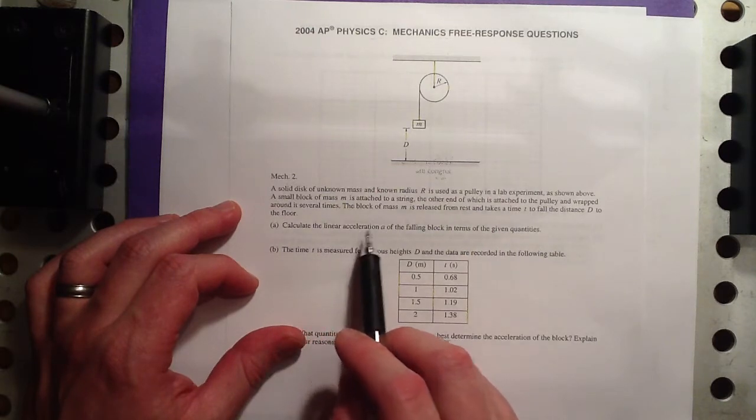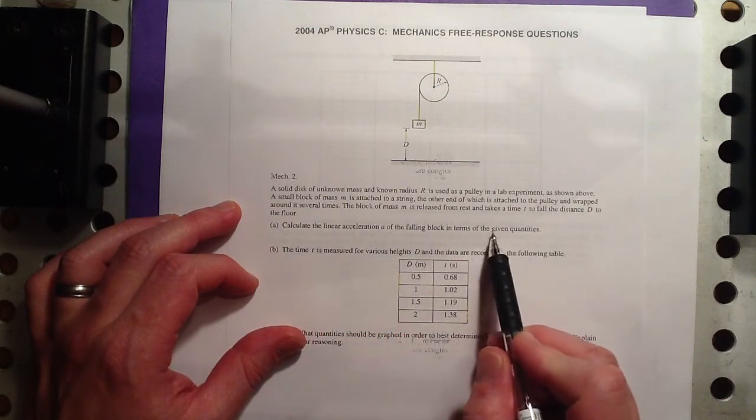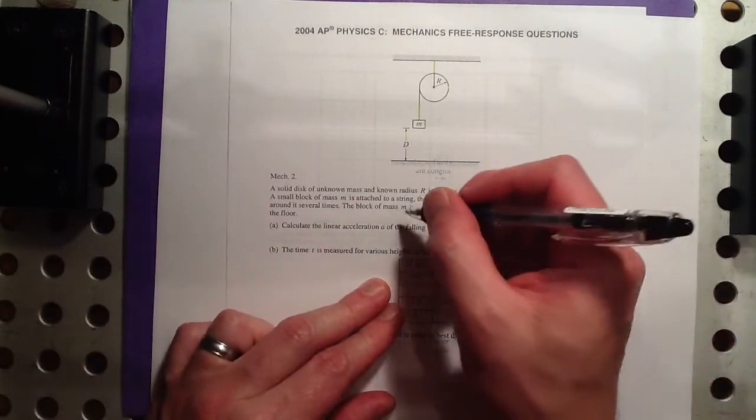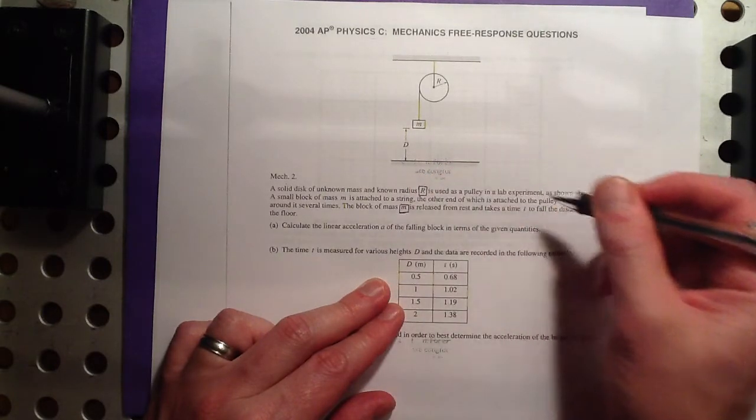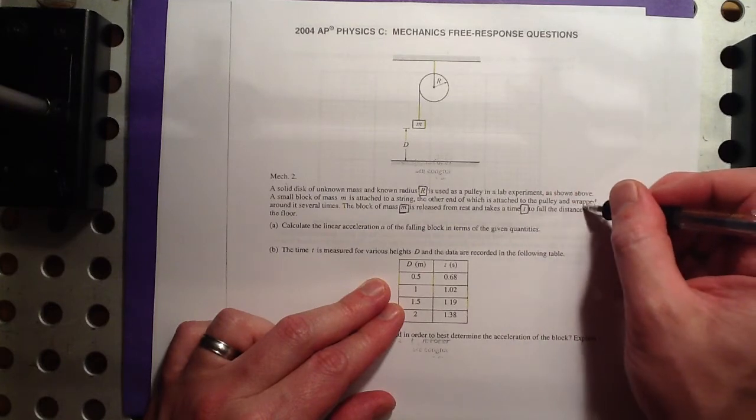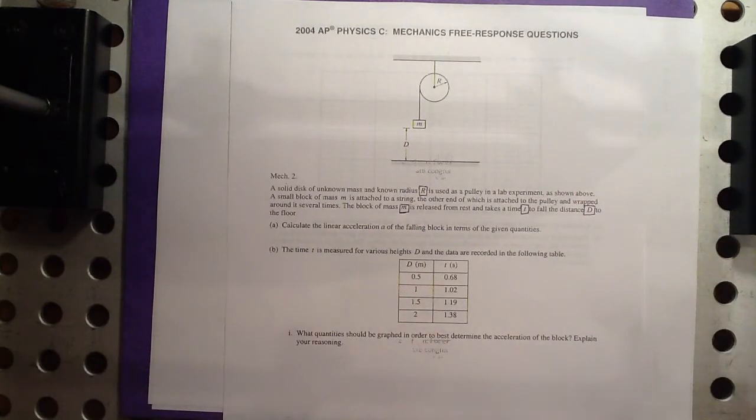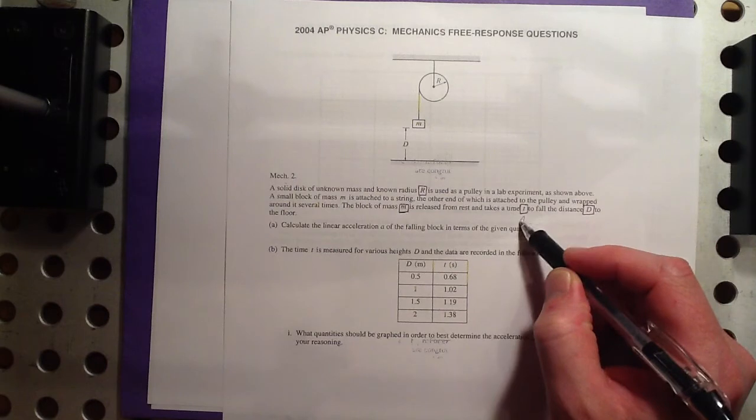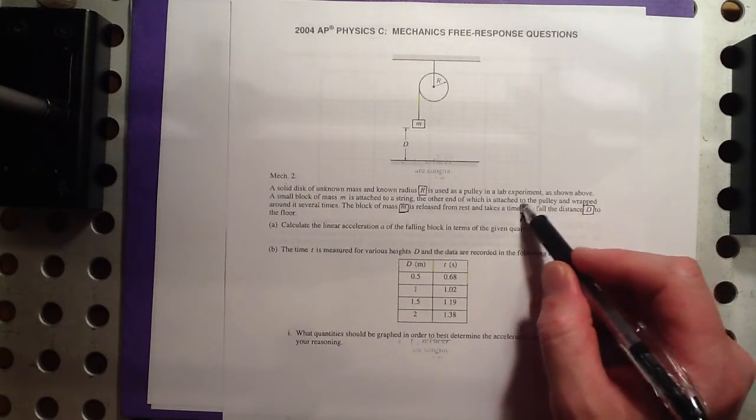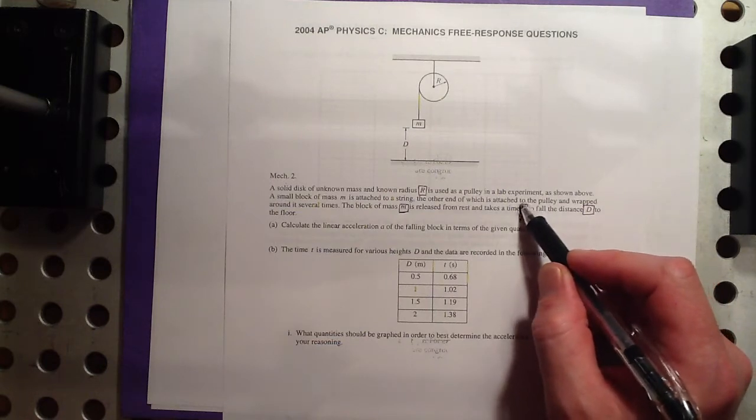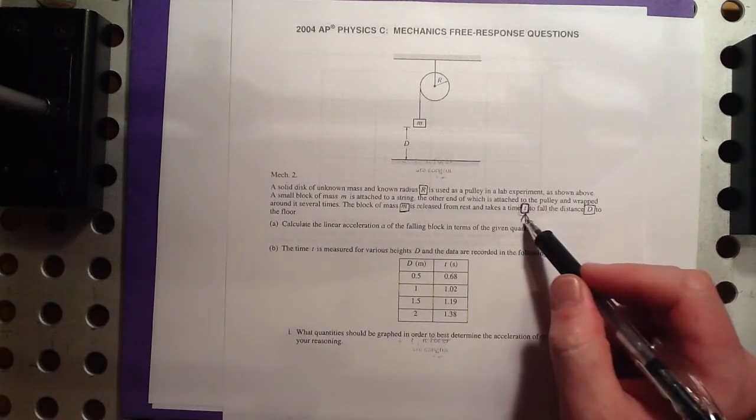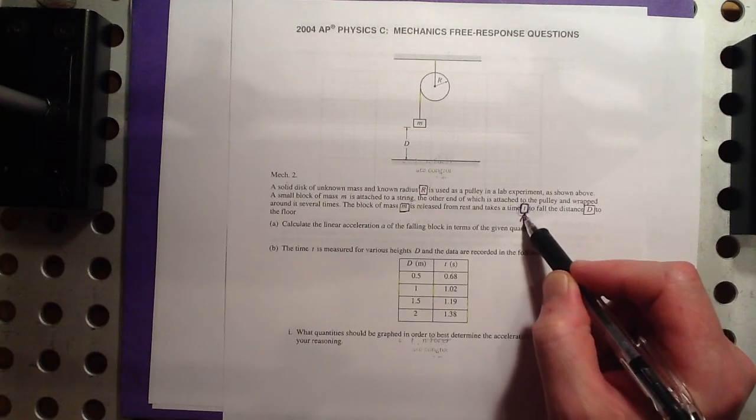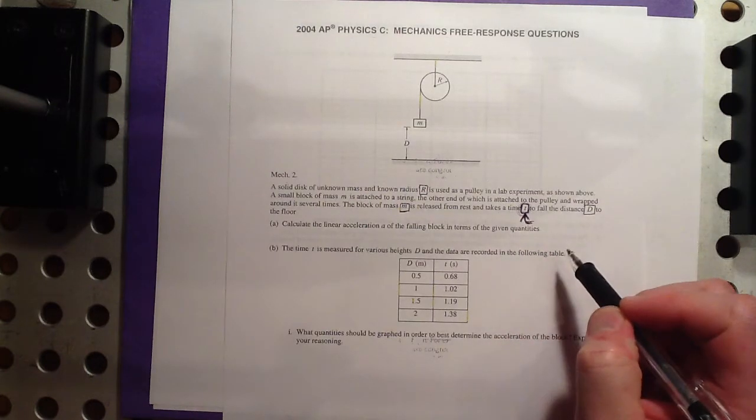Okay, so calculate the linear acceleration A of the falling block in terms of the given quantities. Given quantities are M, R is the radius of the pulley, T, and D. If you think about your map of all of your different concepts and equations and relationships, time only really comes into play in a few places. Time is the variable in kinematics equations and it's also involved in impulse and power. But I don't think this problem has anything to do with this.